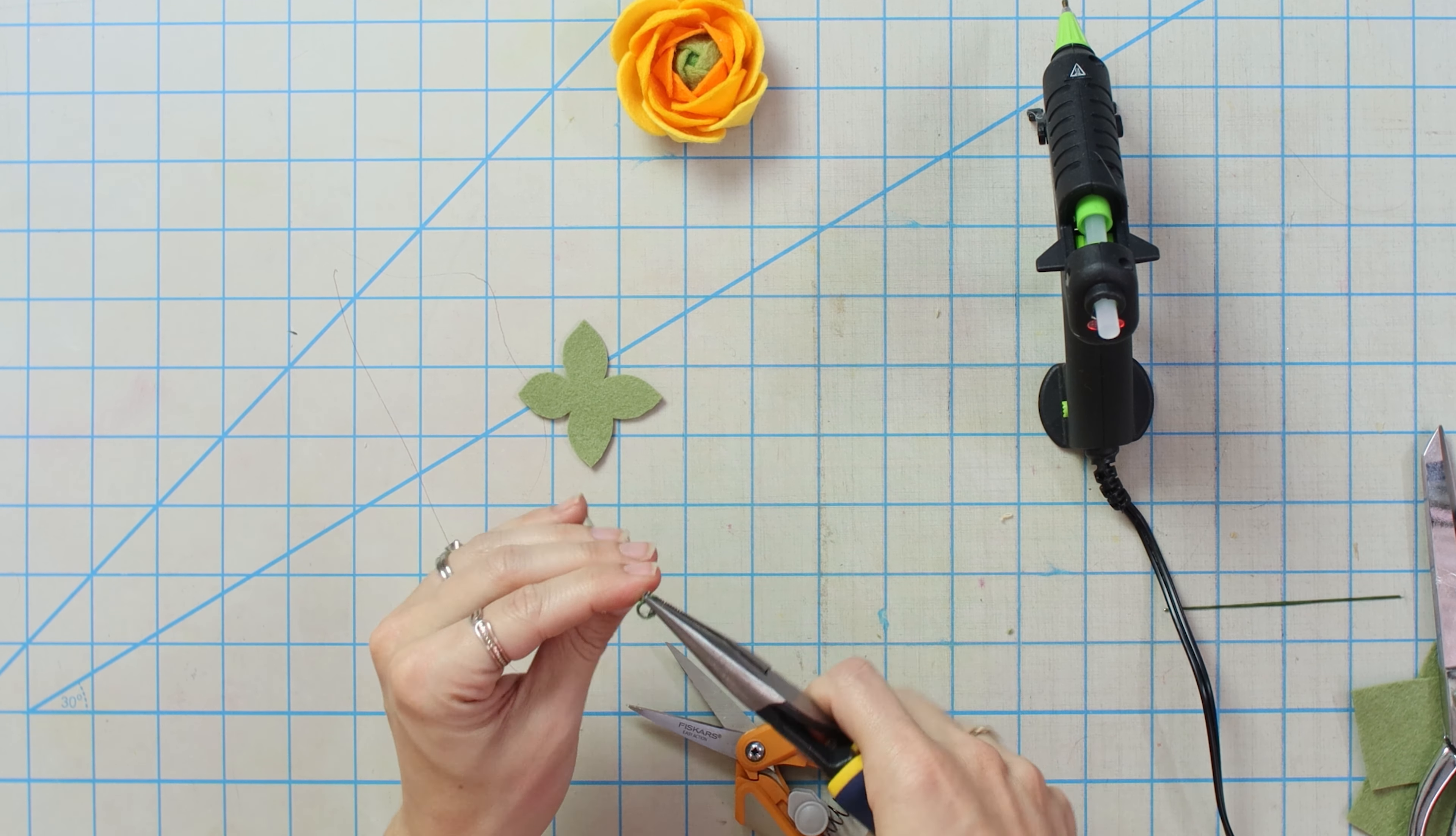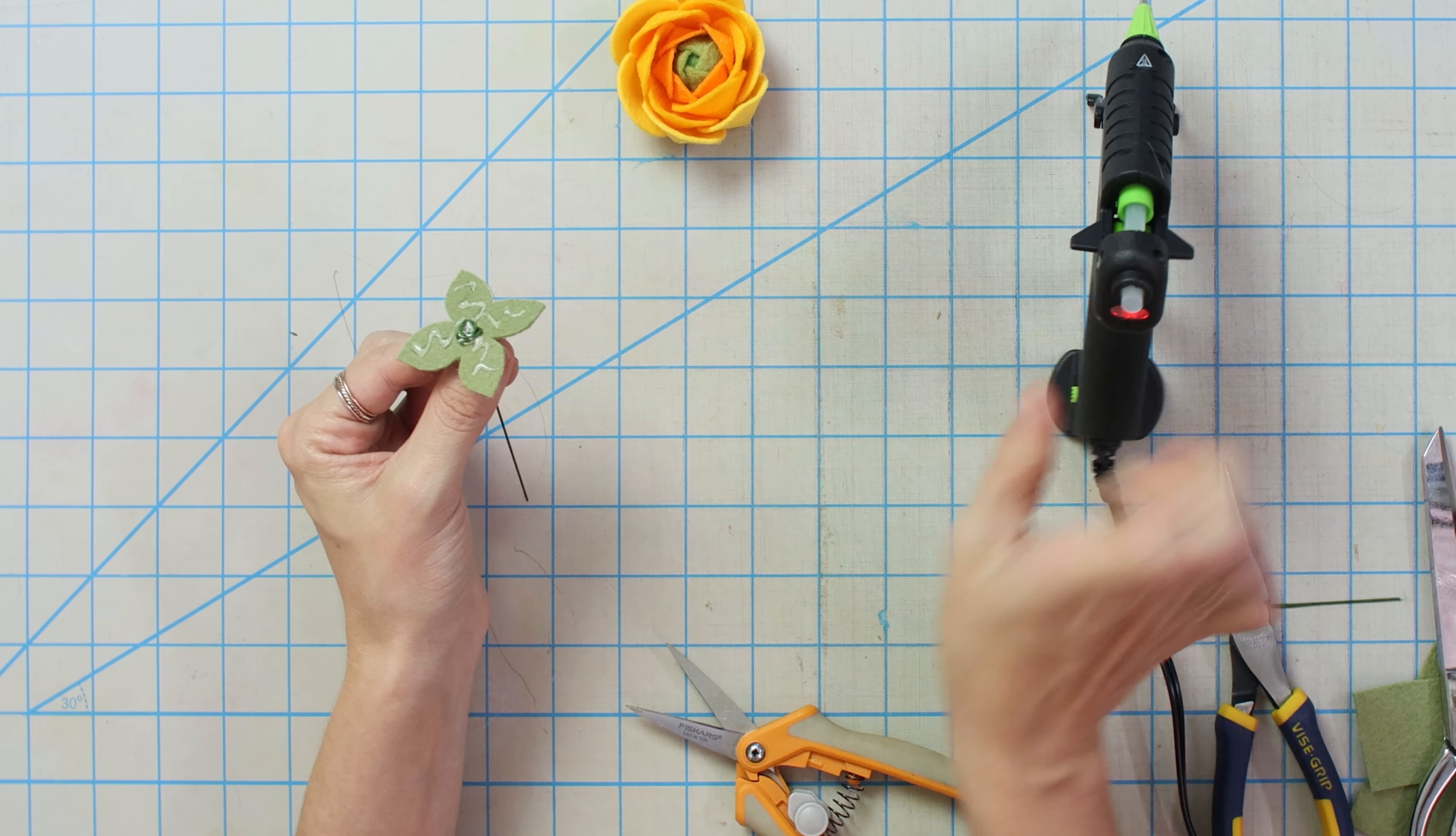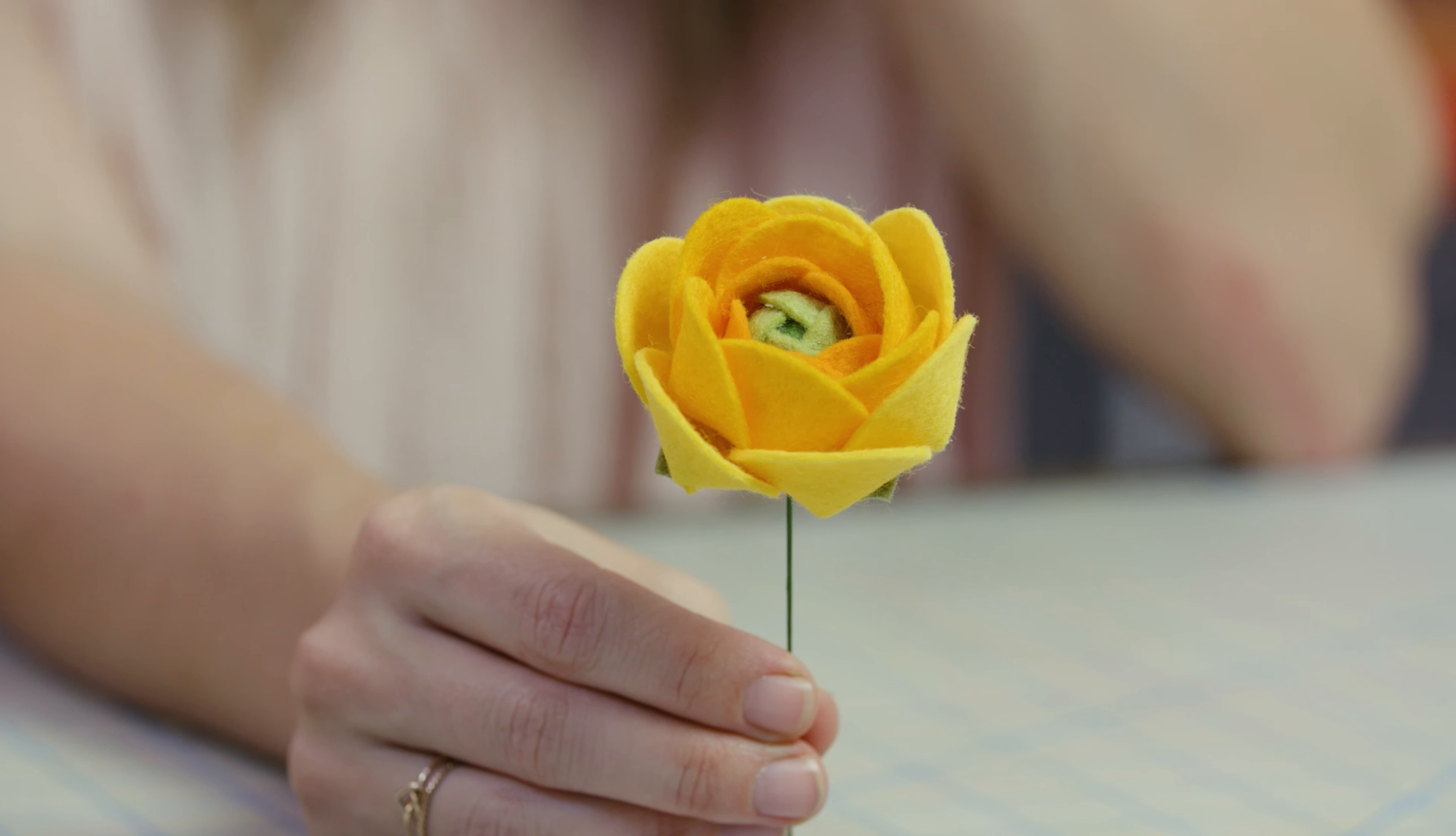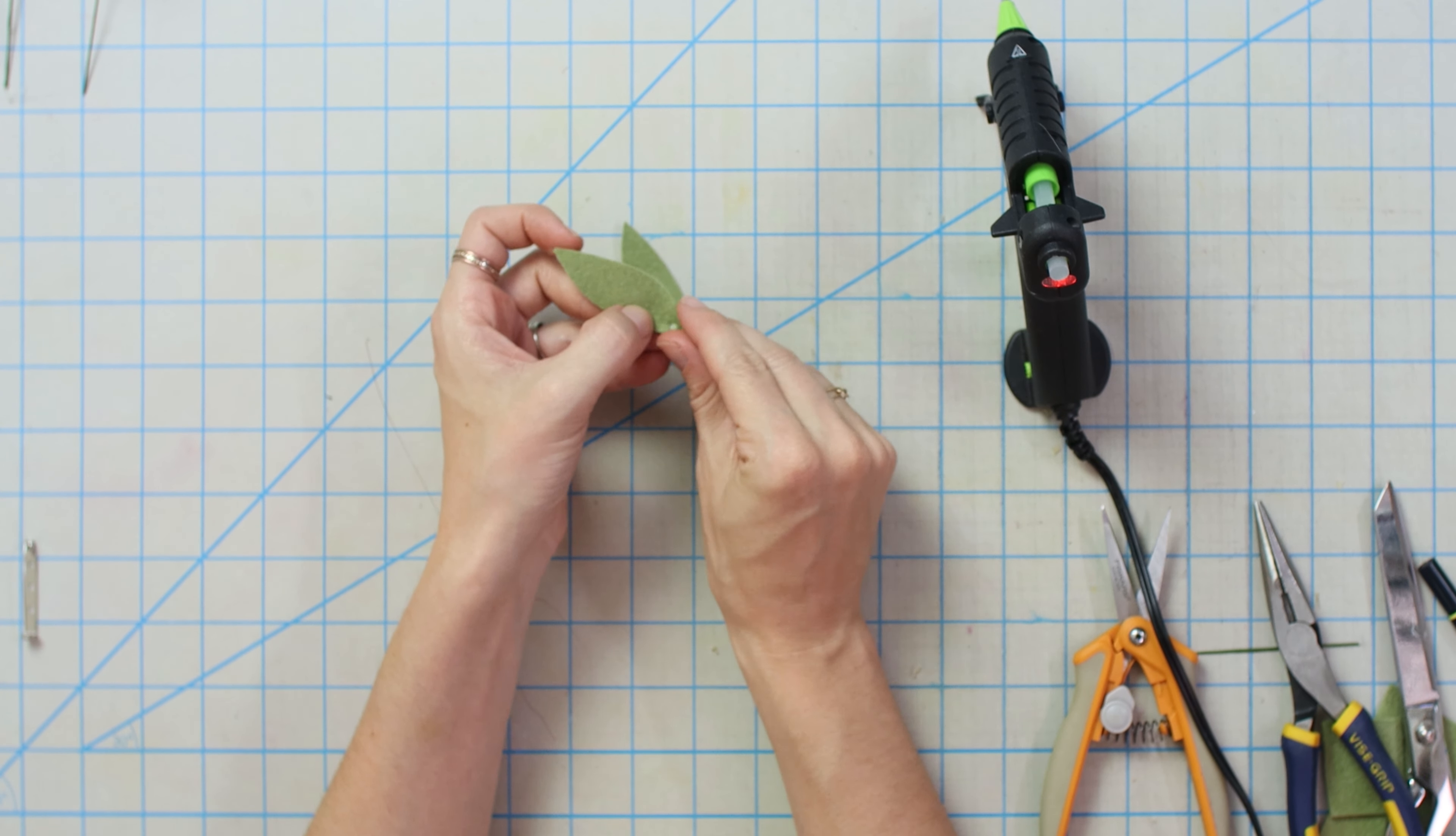I'm gonna get another piece of wire. This is about five inches, just like my other ones. And we're gonna do another little tabletop. Fish this through. We're gonna throw some glue over all of the leaf. And plop our flower on. And now it's on a stem. And here is our ranunculus.